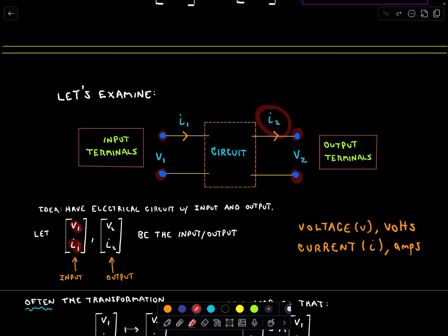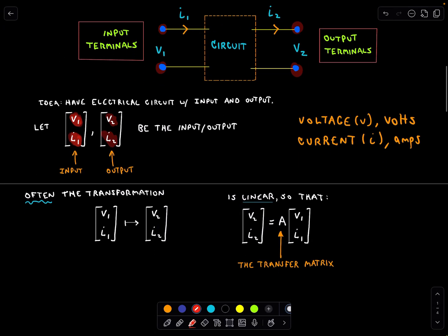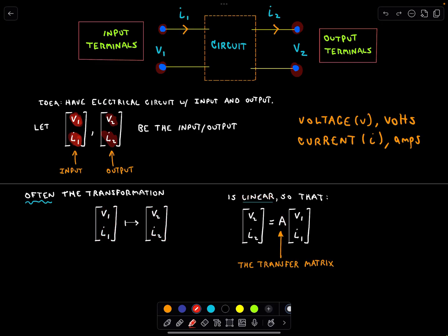So we know the input voltage and the input current. Something happens in the circuit — that's where the magic happens — and then we're going to get some output at the end of the day. We can label the inputs and outputs: we've got this input vector V1, I1, and this output vector V2, I2. So we've got some electricity going in, it hits the circuit, something happens, and we just see what comes out. That's the basic idea.